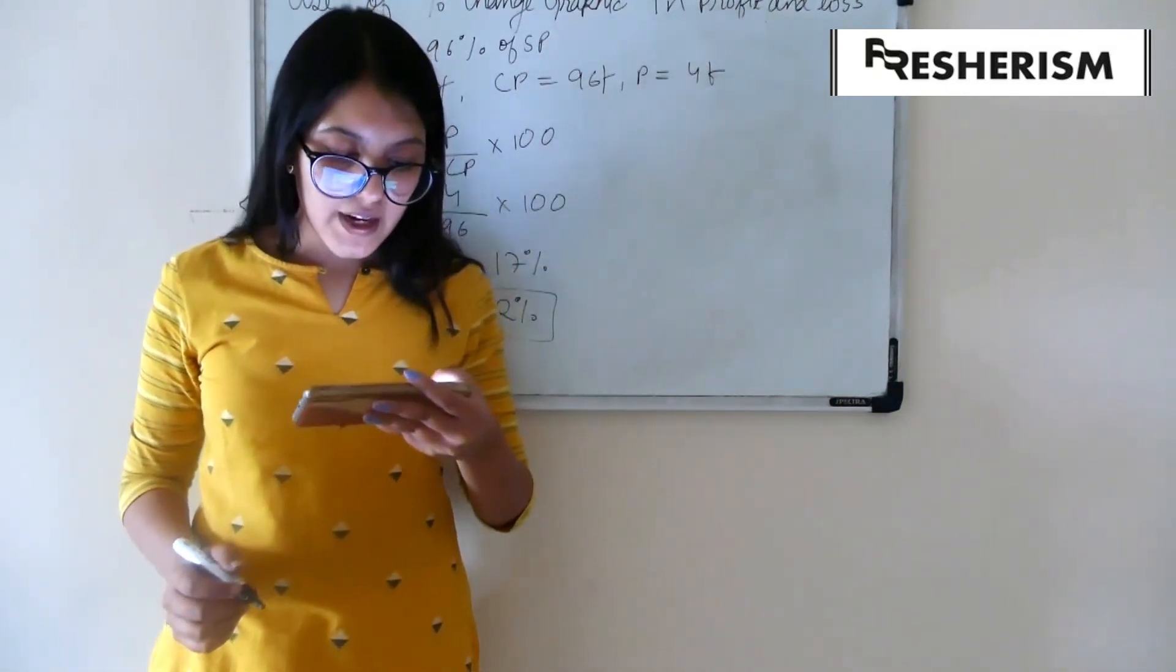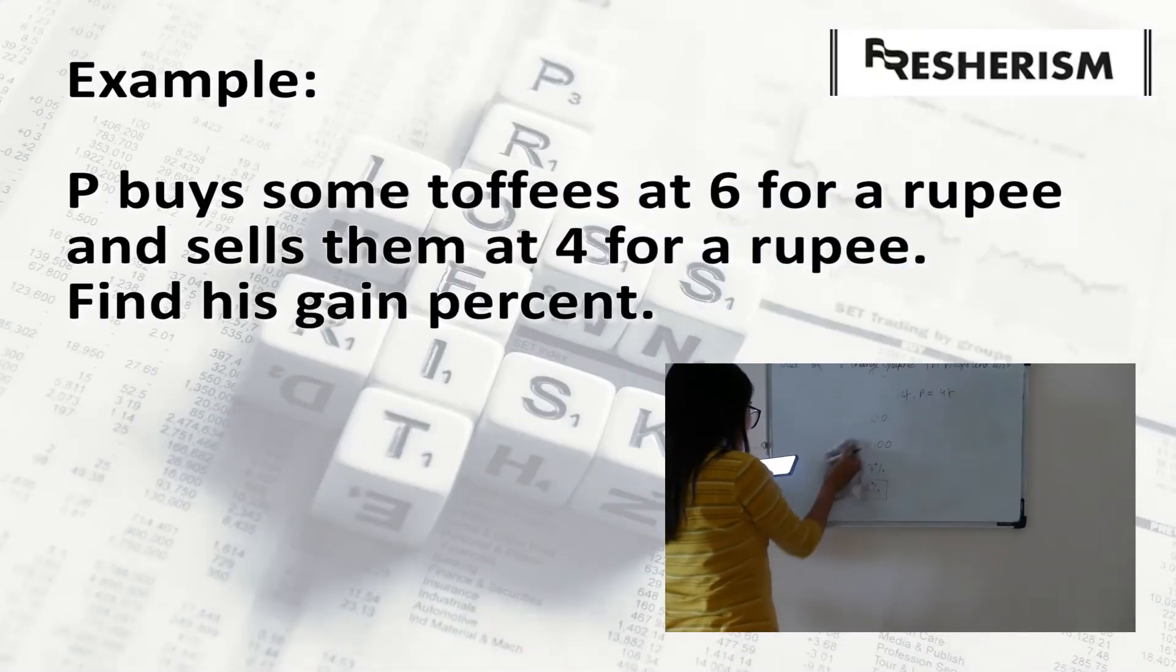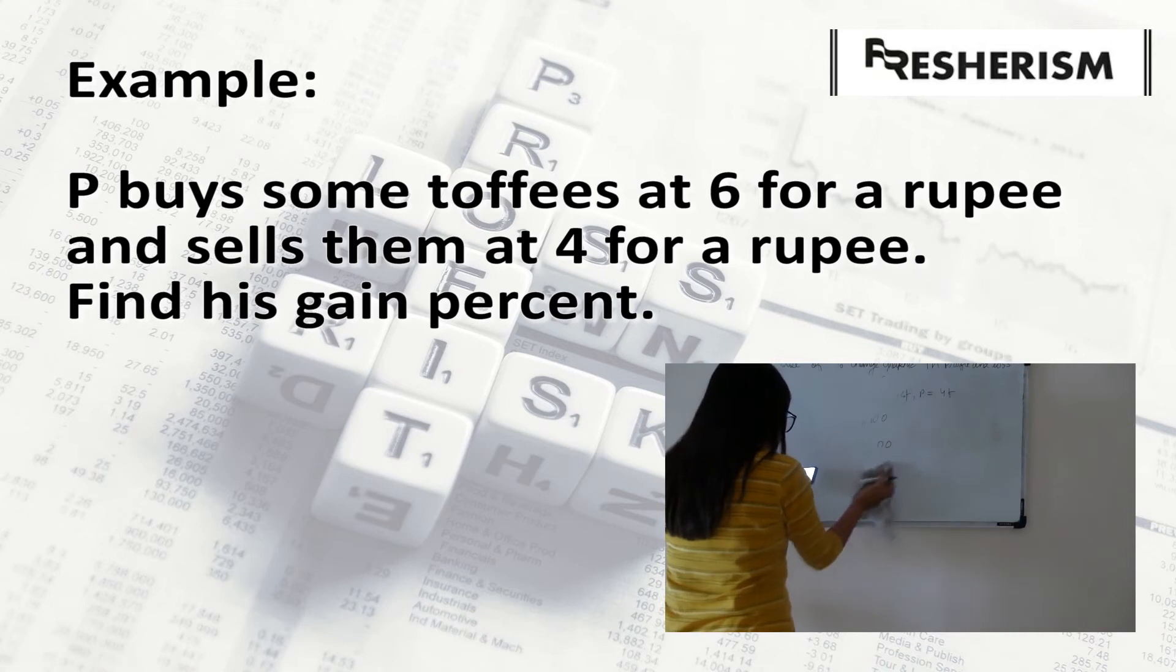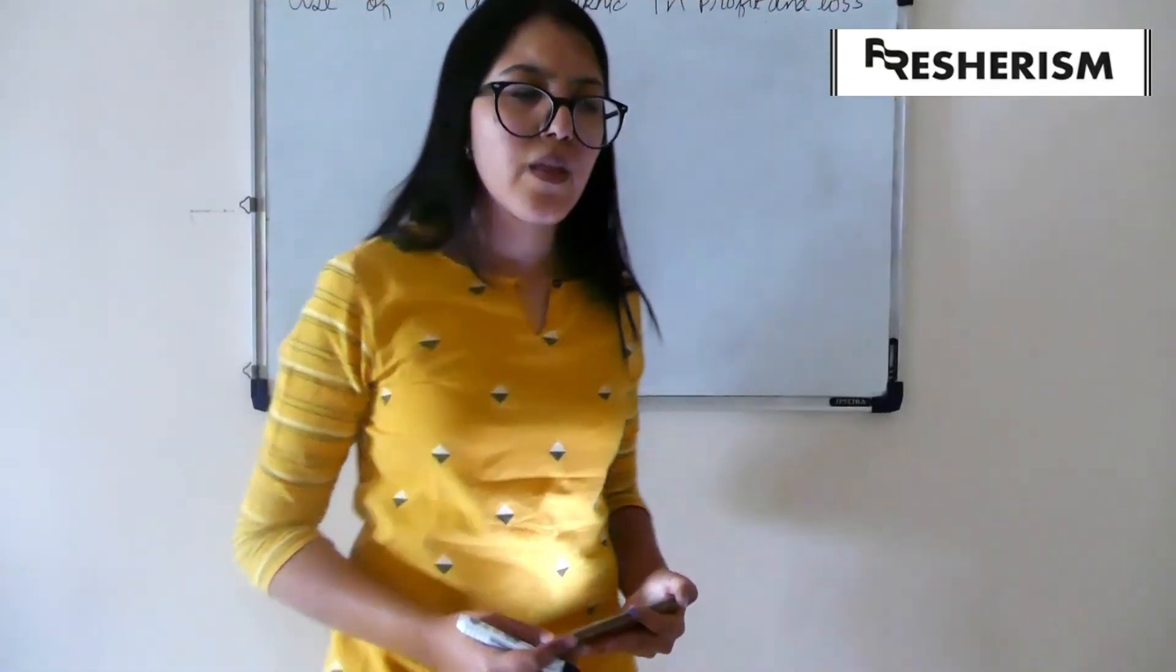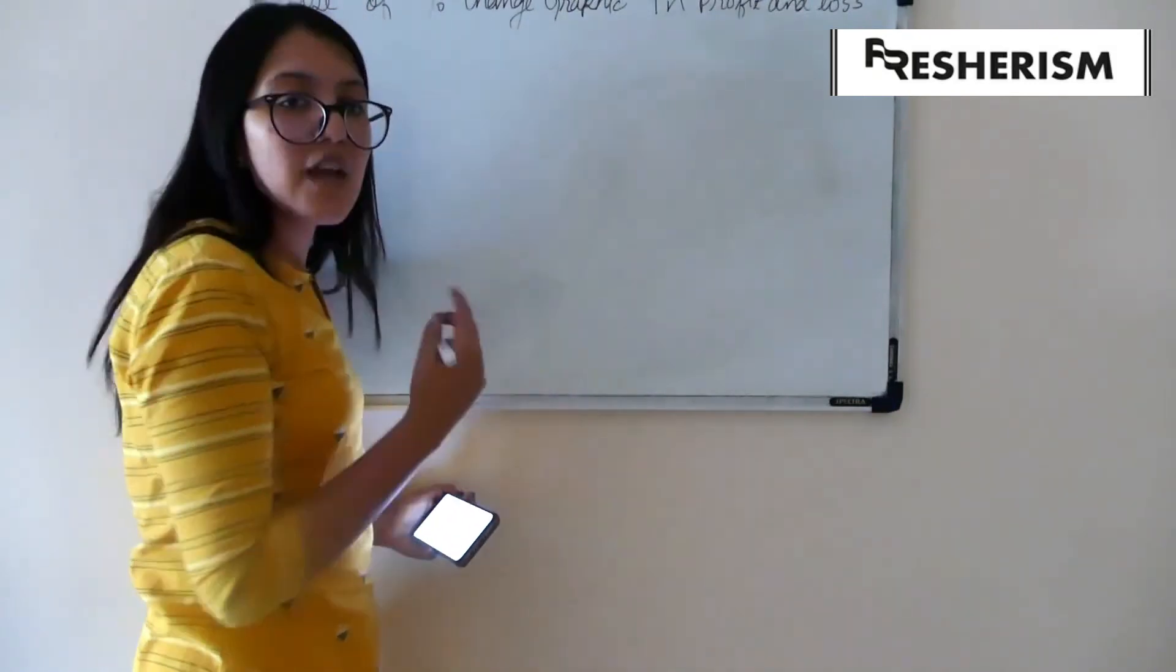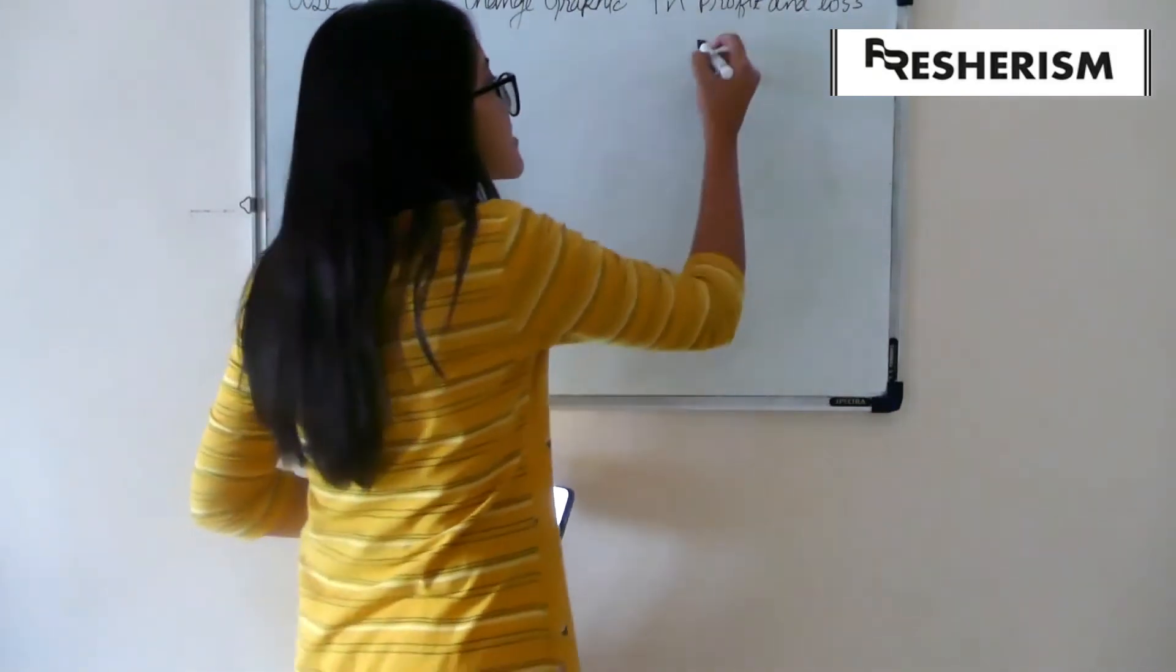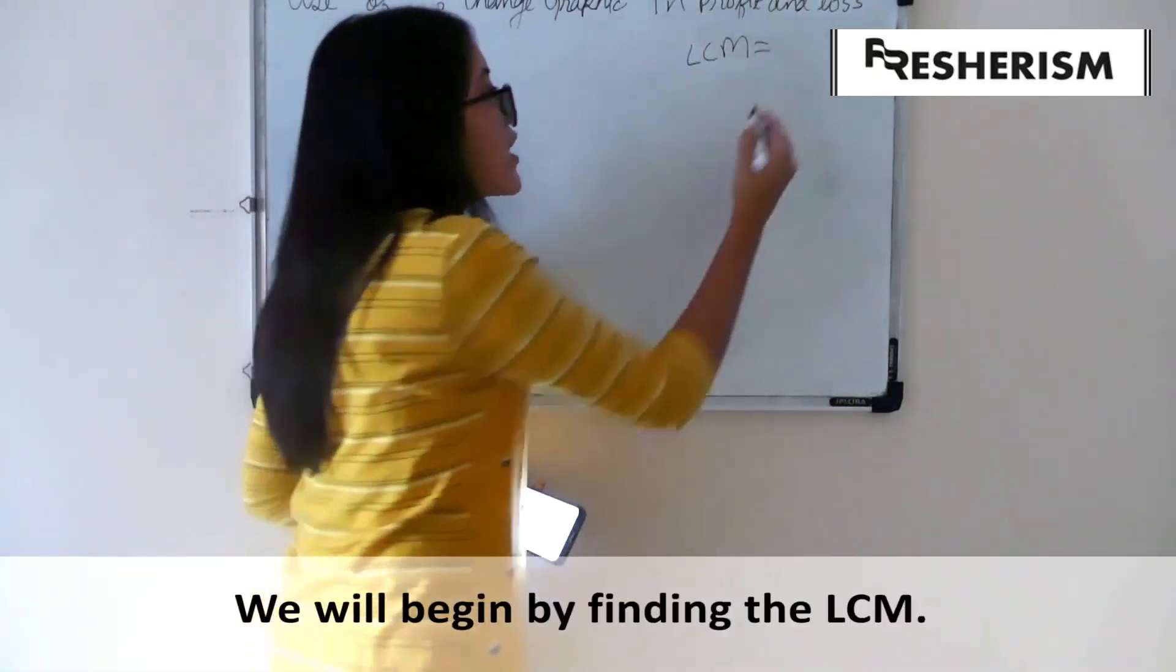Let us now move on to another example. The question on your screen now reads, P buys some toffees at 6 for a rupee and sells them at 4 for a rupee. Find his gain percent. Let us now look at the solution to this question. Since we have been given 6 and 4 as the number of toffees, let us first find the LCM of it, which will be 12.